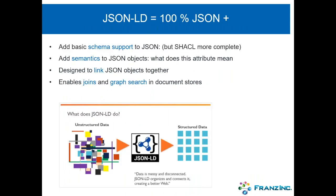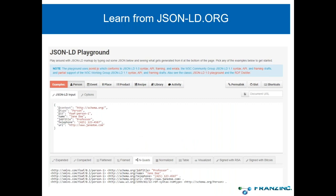JSON-LD is still 100% JSON with some additional things. It adds basic schema support, semantics to JSON objects — so now you know what an attribute actually means and how it fits with a particular type — and a typing system. JSON-LD, as its name says, is all about linking data, so it's built to link JSON objects together. That also enables joins and graph search in hybrid document stores where you do both graphs and documents.